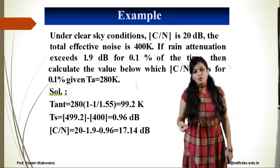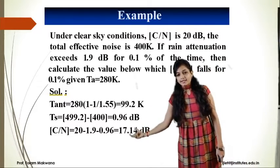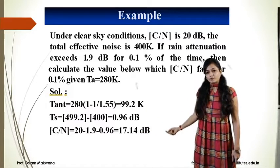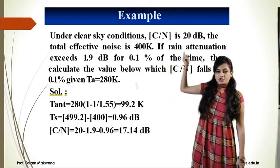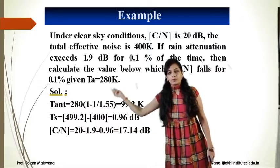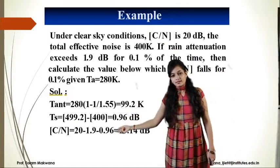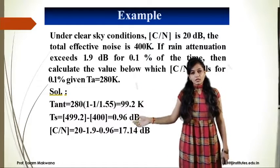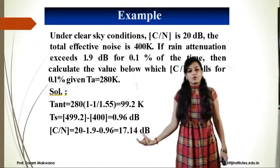After rain attenuation, C/N = 20 − 1.9 − 0.96. The 1.9 dB is the rain attenuation we subtract, and 0.96 dB is the system temperature increase. So the resulting C/N is 17.14 dB.